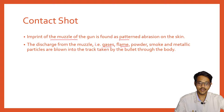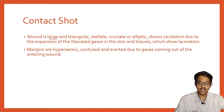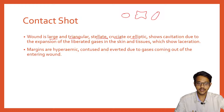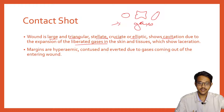The discharge from the muzzle — gases, flame, gunpowder, smoke, and metallic particles — are all blown into the track taken by the bullet through the body, so all are deposited inside. The wound is large and triangular, stellate, cruciate, or elliptical in shape. It may show cavitation due to expansion of liberated gases in the skin and tissue, which shows laceration.